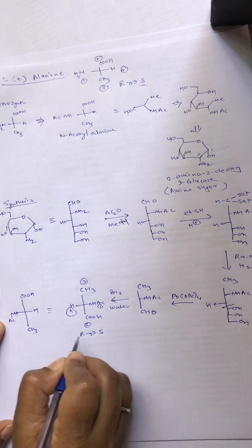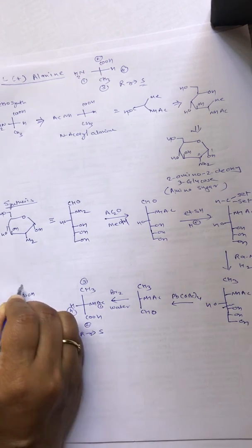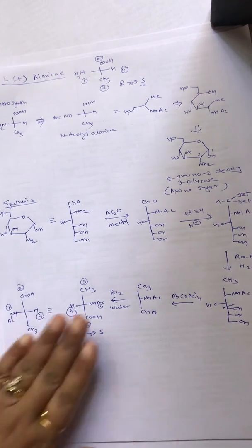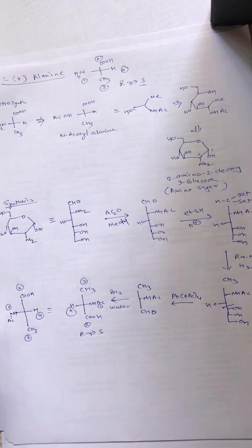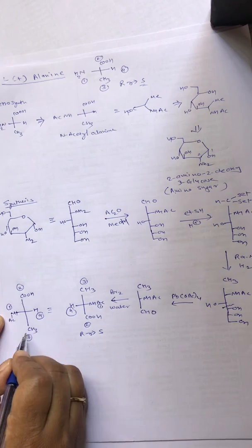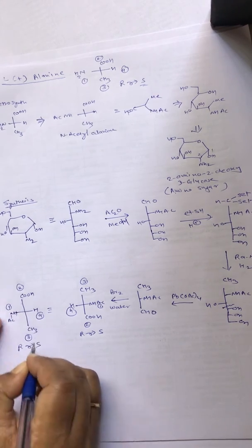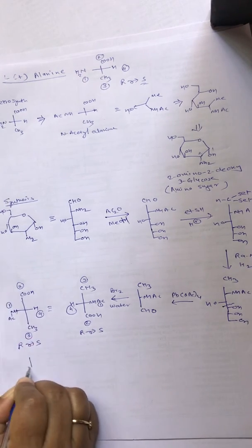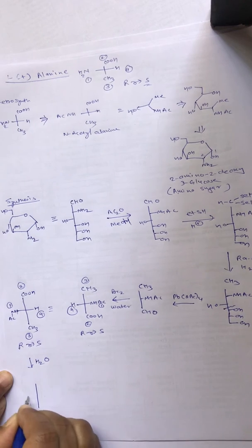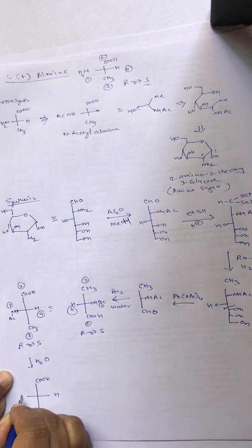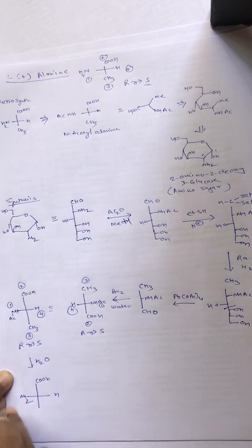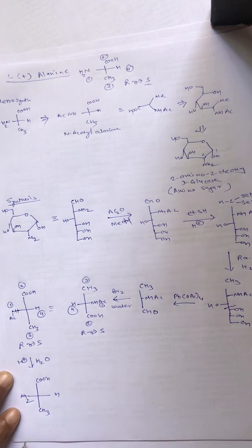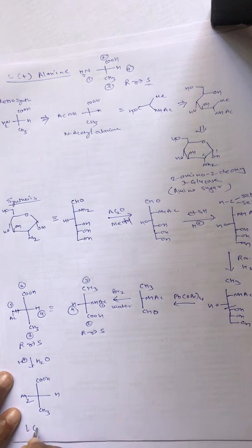Let us again confirm our configuration, which has to be S only: 1, 2, 3, 4. When you convert any one structure into another, it's better to confirm its configuration again. We have not changed any configuration; we have just rotated the structure. S remains S. This on hydrolysis will give you COOH-H-NH2. The acetyl protection will go in presence of H+, and this is L-alanine.